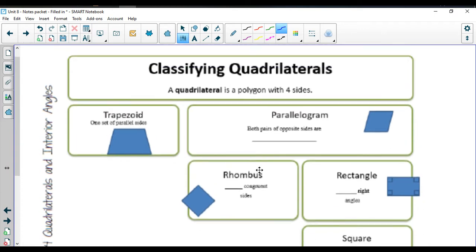The next lesson is 8.4. We're going to be talking about quadrilaterals and interior angles. We're going to talk about classifying quadrilaterals for right now.